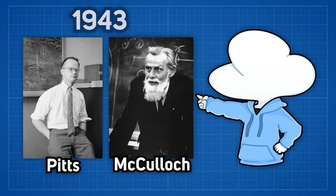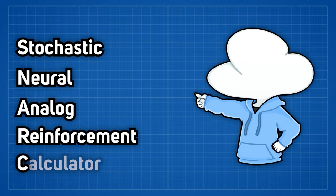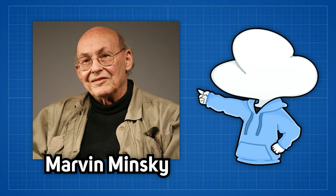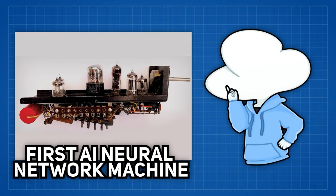And eight years later, SNARK, short for Stochastic Neural Analog Reinforcement Calculator, was born, created by a young and aspiring graduate student, Marvin Minsky. His work was later known as the first ever artificial neural net machine that was ever created.